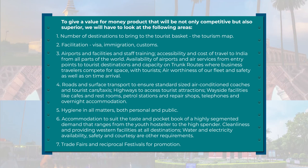Number six: accommodation to suit the taste and pocketbook of a highly segmented demand ranging from the youth hosteler to high spenders. Cleanliness, provision of Western facilities at all destinations, water and electricity availability, safety, and courtesy are other requirements. Number seven: trade fairs and reciprocal festivals for the promotion of tourism in India and making India an attractive destination. For this restructuring of the tourism industry, many feel that incentives play an important role; however, experience points out that what matters in the final analysis is the kind of facilities provided to tourists.